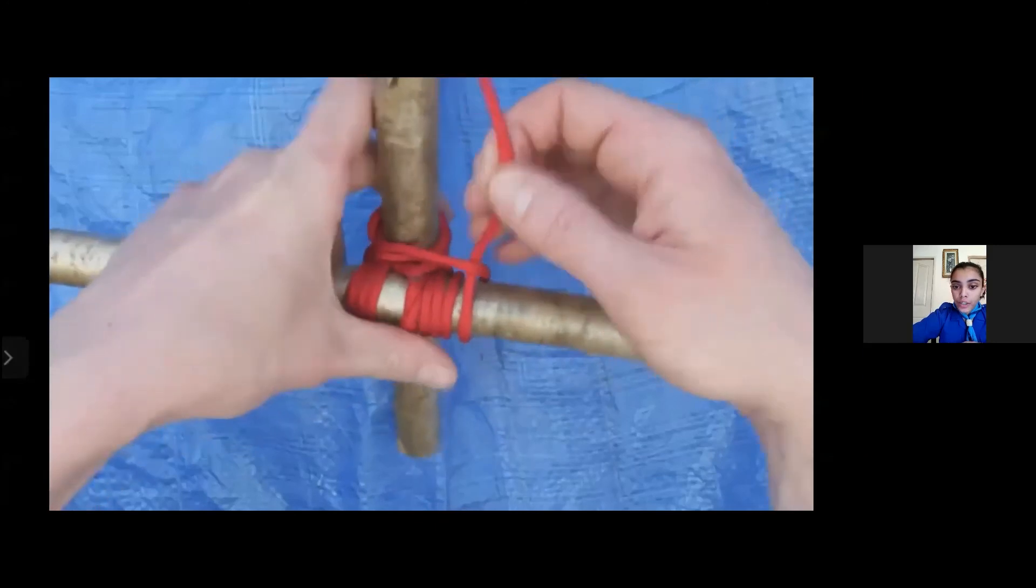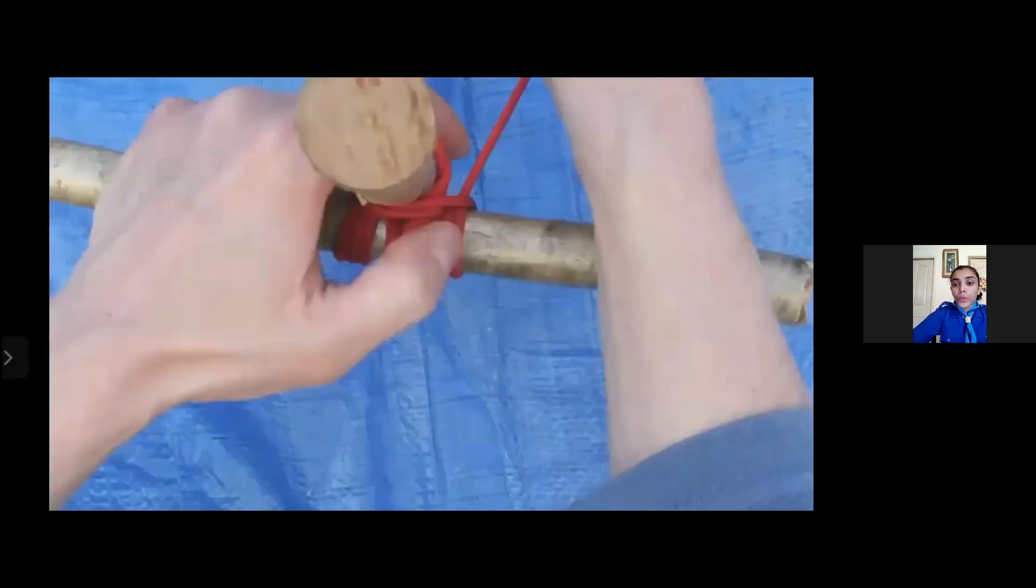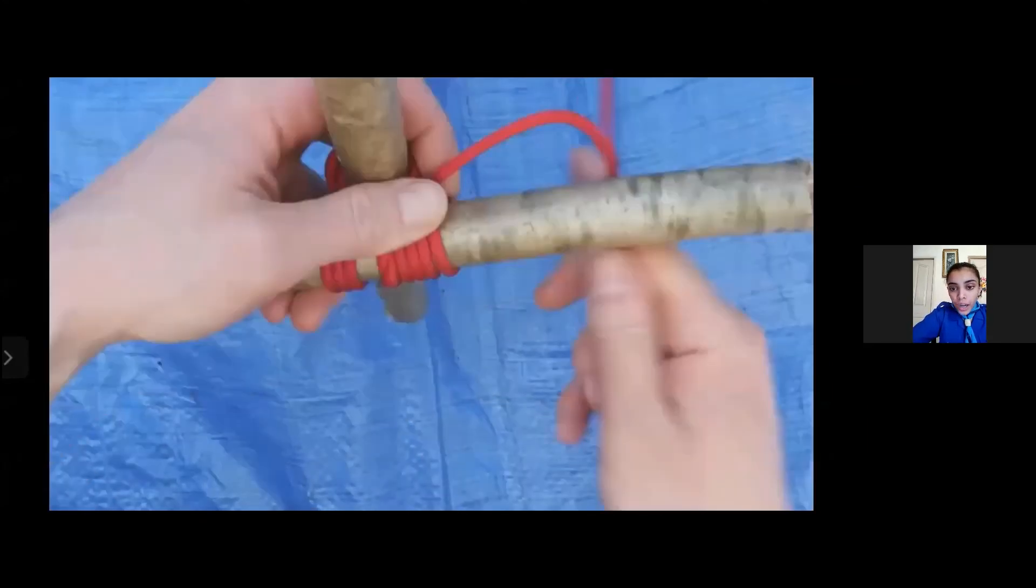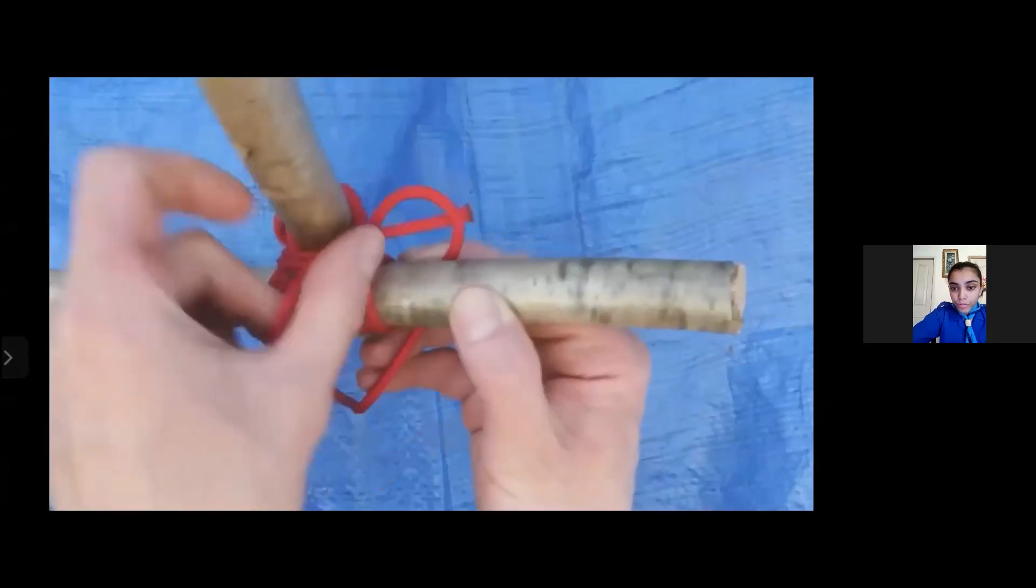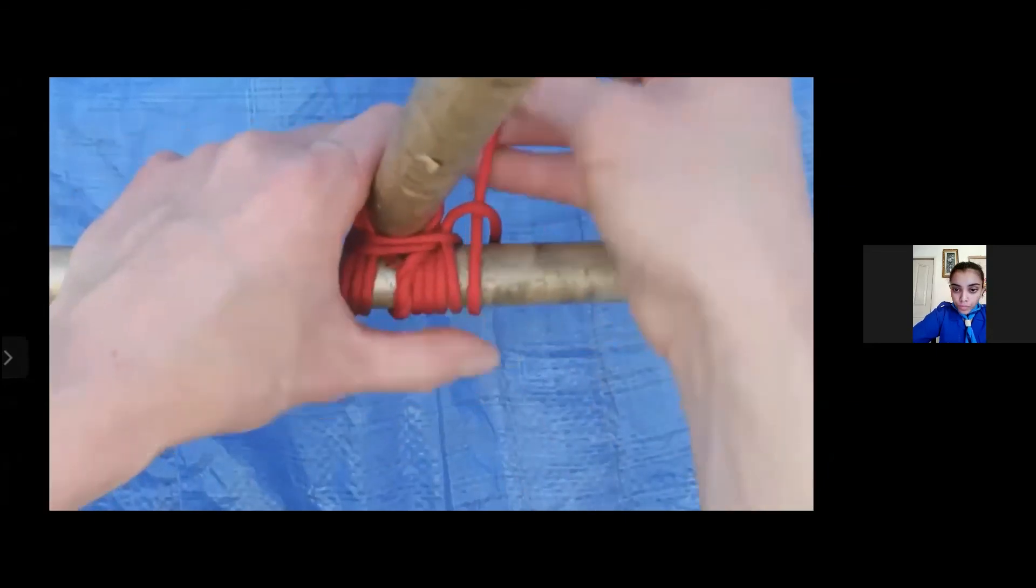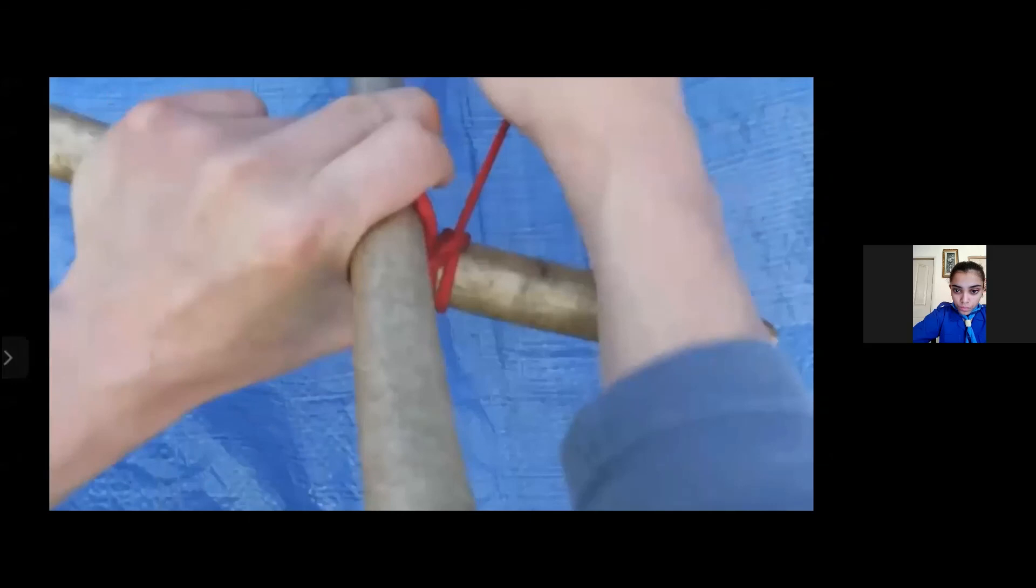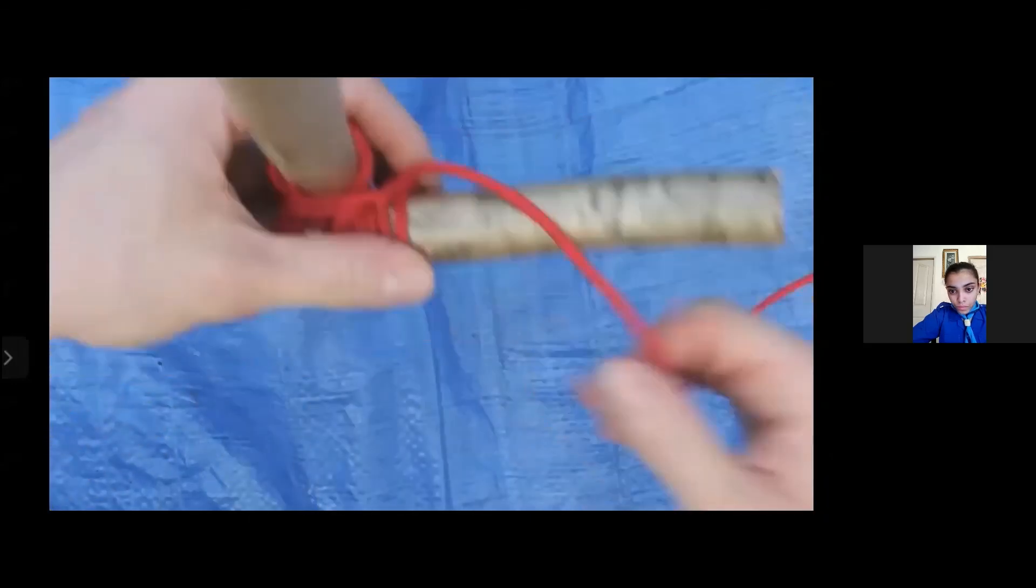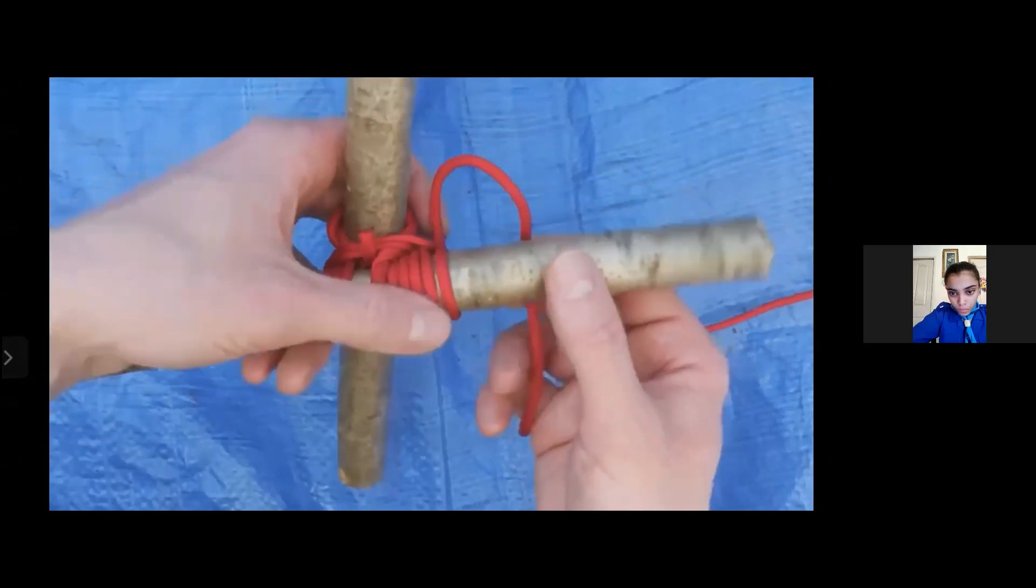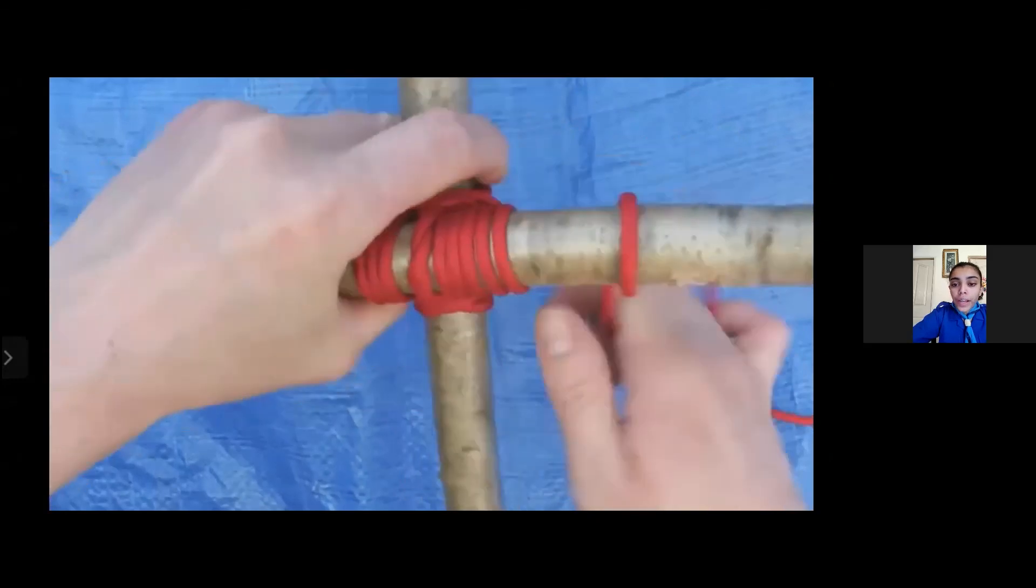Tie a knot at one of the sides of the rope whichever end it is coming to and you tie it as tightly as possible. Then as shown in the video you take the rope and you stitch it backwards and forwards. And then you tie another knot, you do the same thing.